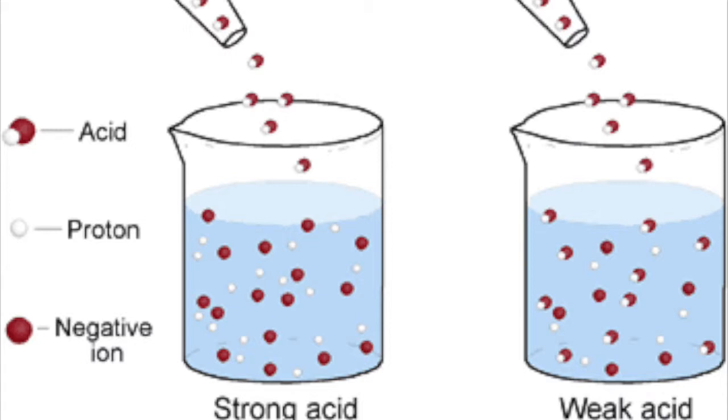Well, it comes down to the dissociation of the ions of the acid. The one on the left is a strong acid because its ions dissociate completely. The one on the right is a weak acid because its ions do not dissociate completely.